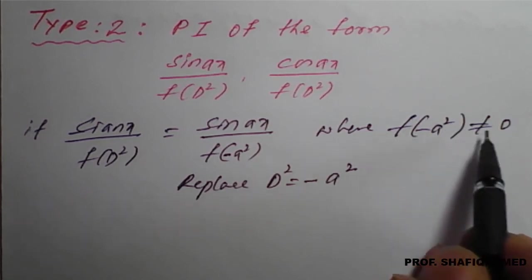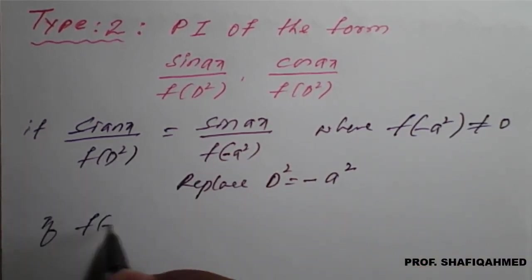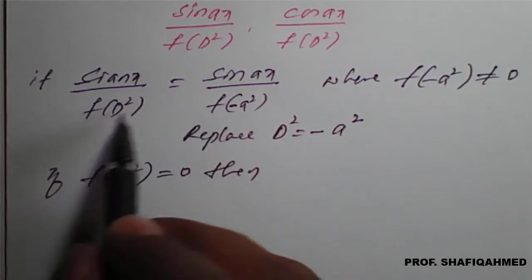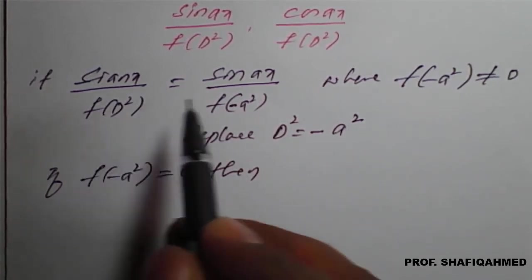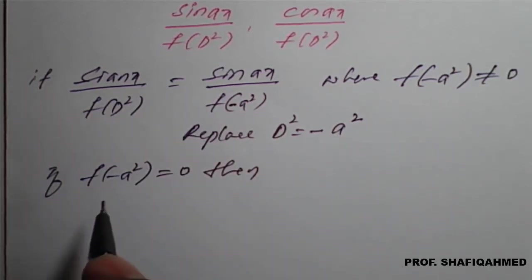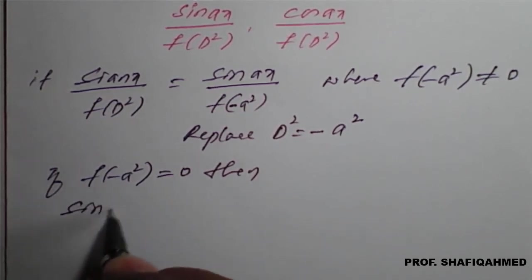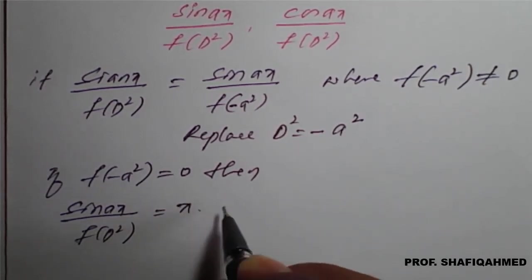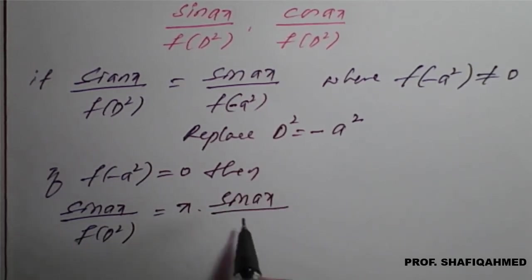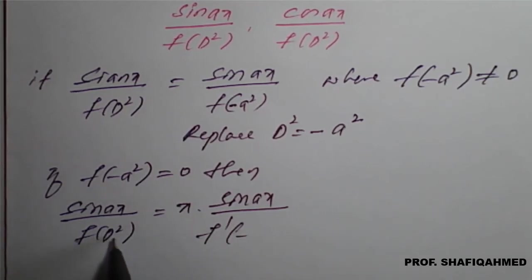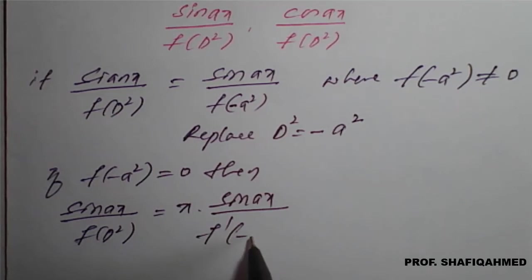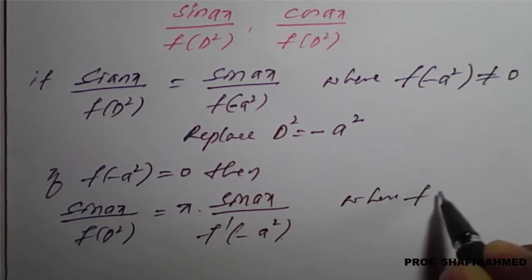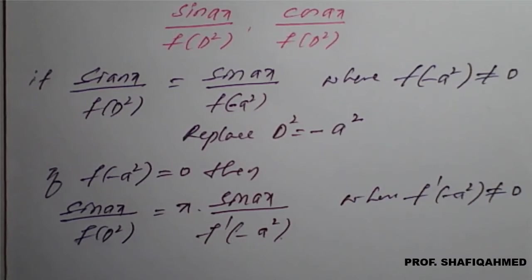If f of minus a² equals zero, then the procedure is: we have to differentiate the denominator with respect to D and then multiply by x. We have already done a similar case in Type 1. So sin(ax) upon f(D²) becomes x times sin(ax) divided by f'(D²), where D² is again replaced by minus a², with condition that f' of minus a² should not equal zero.